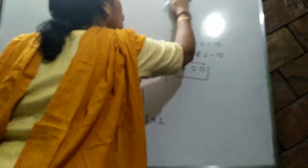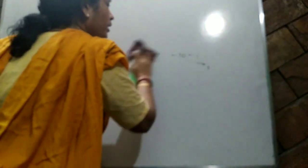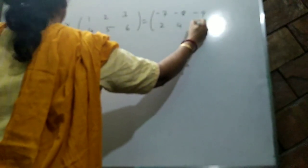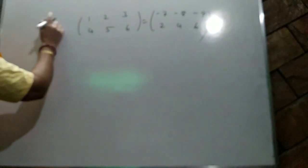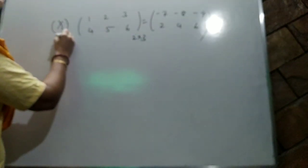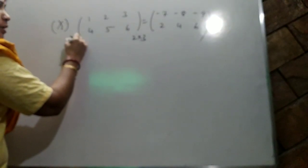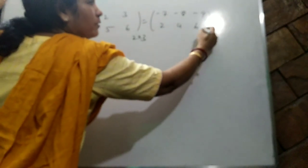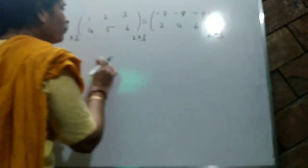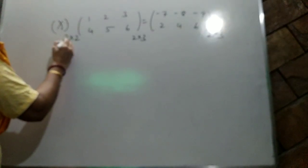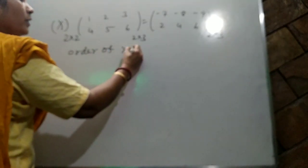Question number eleven from NCRT: X × [1,2,3; 4,5,6] equals [-7,-8,-9; 2,4,6]. The given matrix has order 2×3. We need to find the order of X. For multiplication to work and give a 2×3 result, X must have order 2×2. Two columns of X cancel with two rows of the given matrix. So order of X is 2×2.